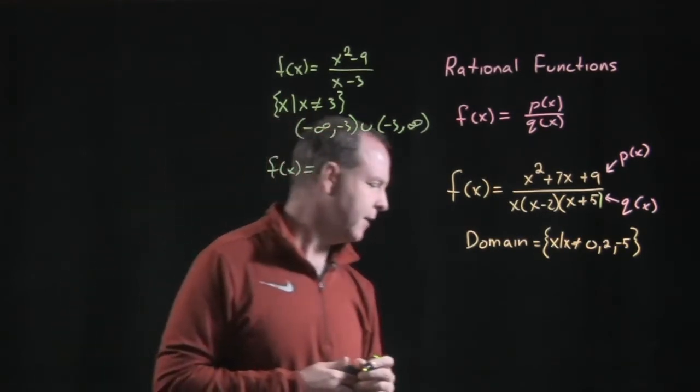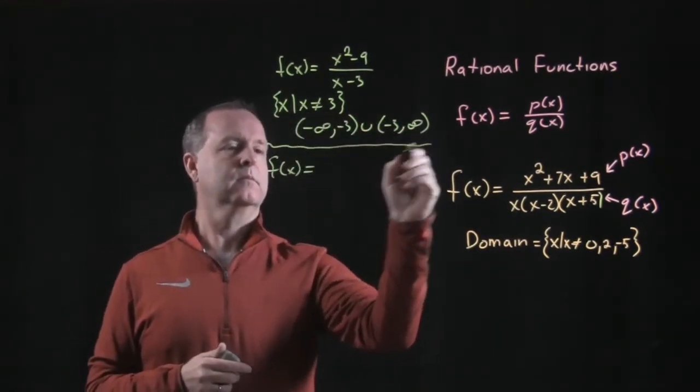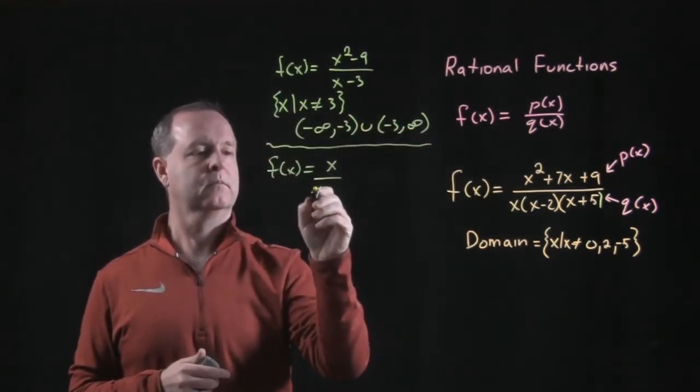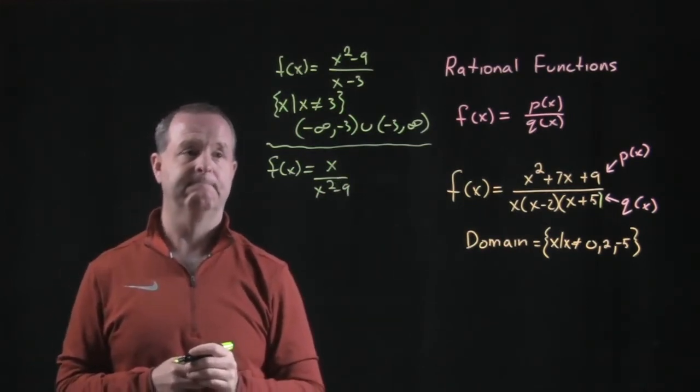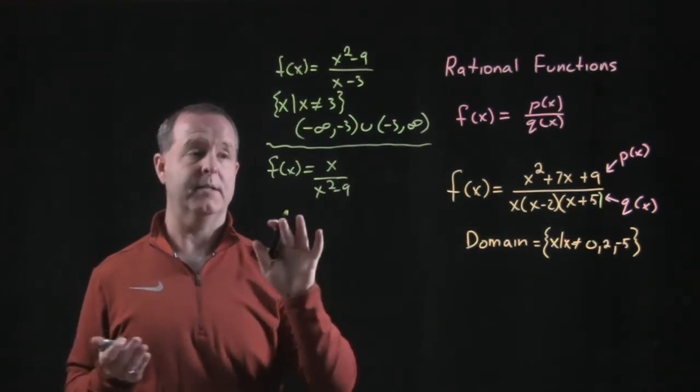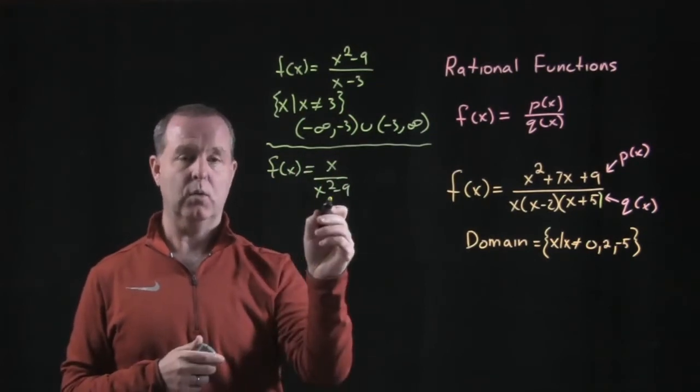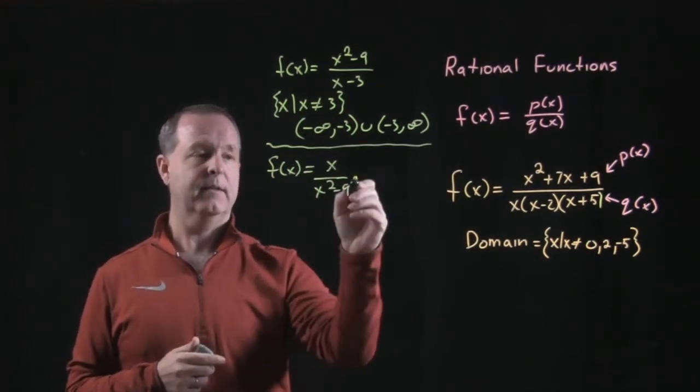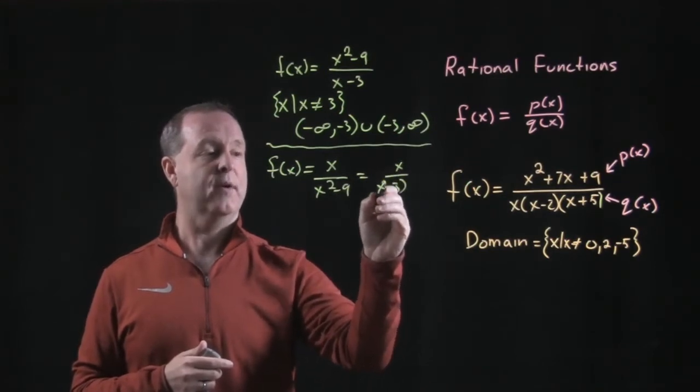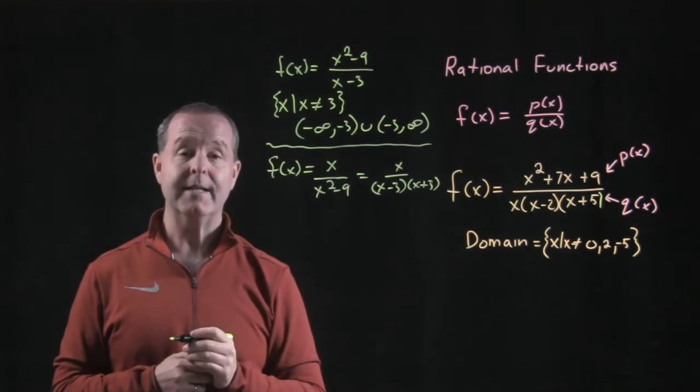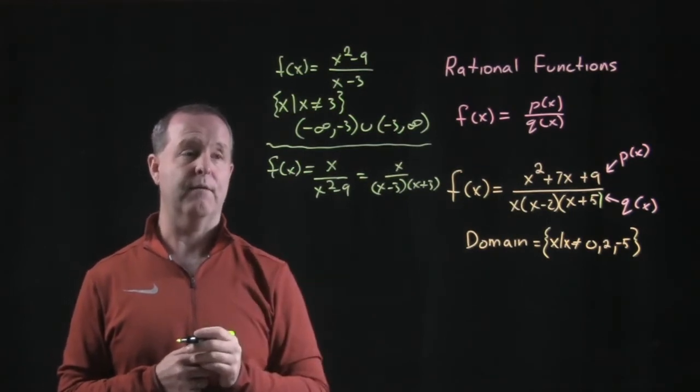Let's look at another example. x over x squared minus 9. Its domain. Look what happens to the denominator. Maybe it's easier to see as you write it, as you factor it out. So there I see that it cannot be 3 or negative 3.